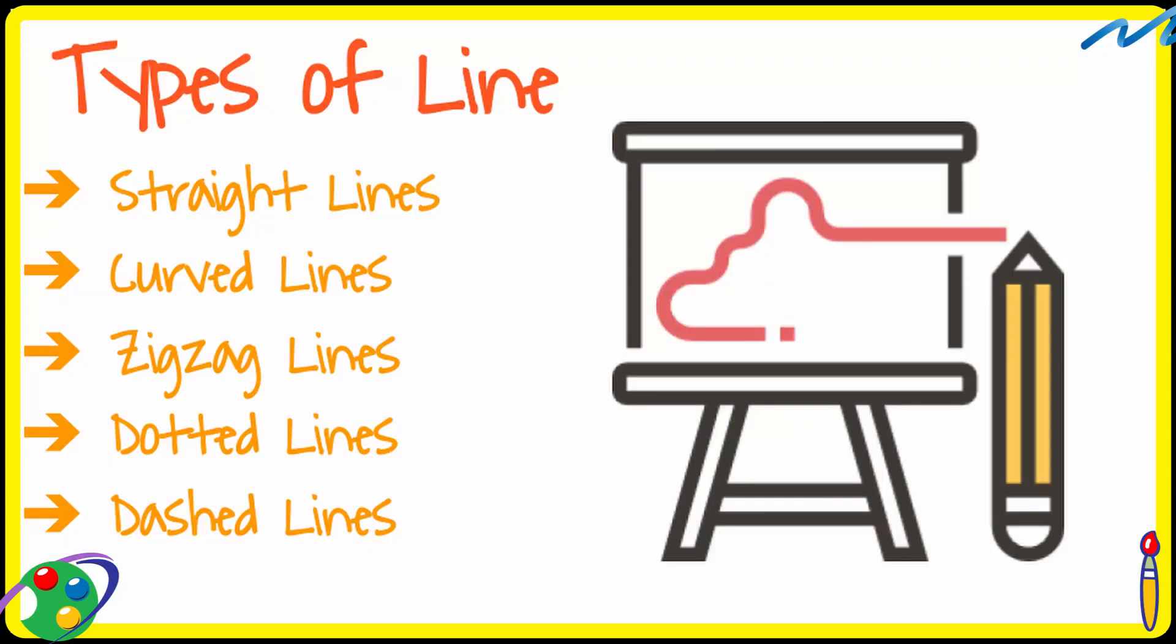Now types of lines. How many different ways a point can go from one location to another? So many ways. And so it creates all kinds of lines. Examples are straight lines, curved lines, zigzag lines, dotted lines, dashed lines. And we can create many other types by mixing these types, like a line which is partly straight and partly curved or dotted. So let us see a demo of these types.